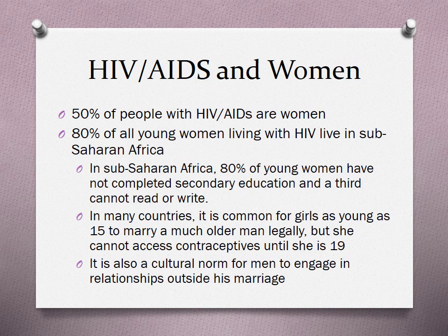In many countries, it is common for girls as young as 15 to marry a much older man legally, but she cannot access contraceptives until she is 19. Looking at some laws in the United States, they too don't always make sense. It is also a cultural norm in many of these countries for men to engage in relationships outside of marriage.